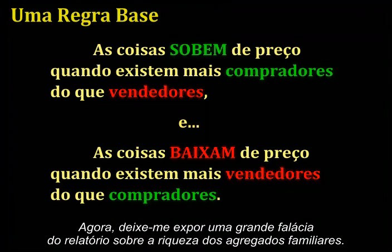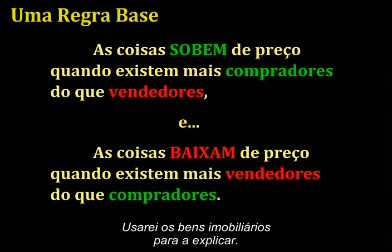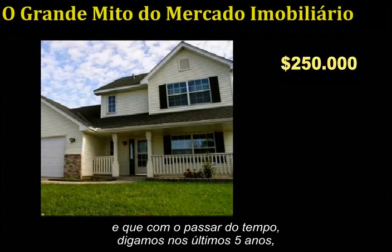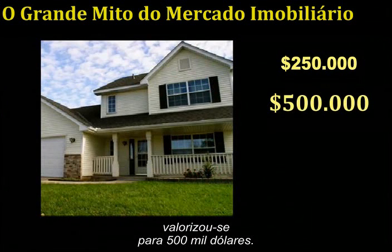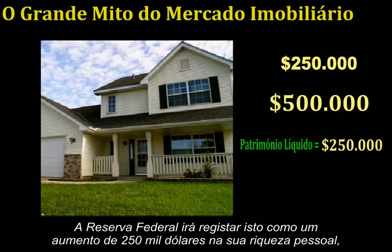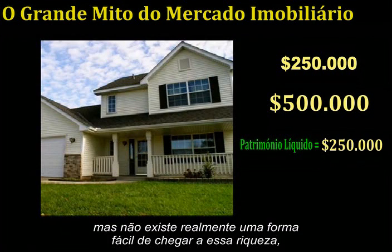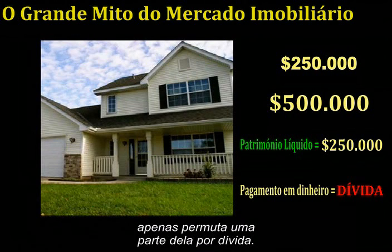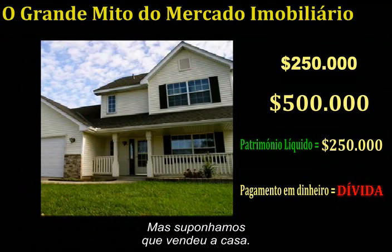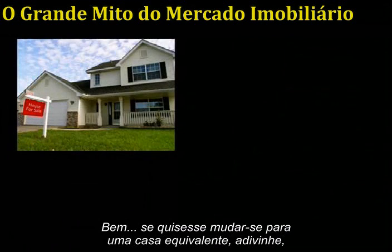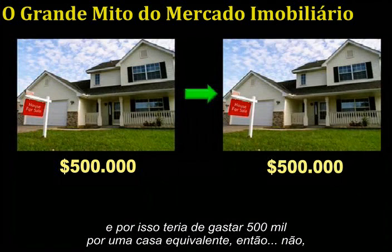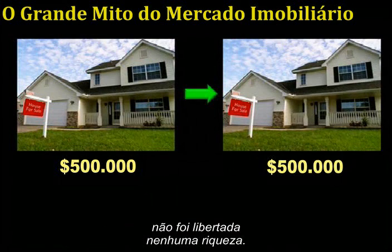Let me expose a great fallacy of the household wealth report — I'll use real estate to make the point. Suppose you have a house that you bought for $250,000, and over the last five years it went up in assessed value to $500,000. The Fed would record this as a $250,000 increase in your net wealth. But there's really no way for you to easily get to that wealth. Sure, you could borrow against it, but that only exchanges an amount of it for debt. But if you sold your house and wanted to move into an equivalent house, they've all gone up in price — so you'd have to spend $500,000. No wealth was liberated there.